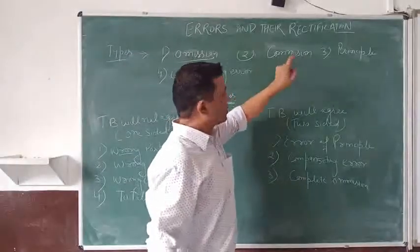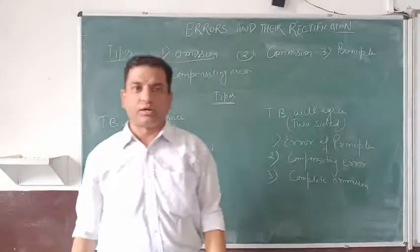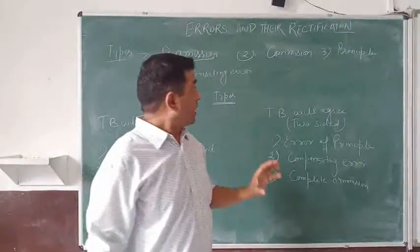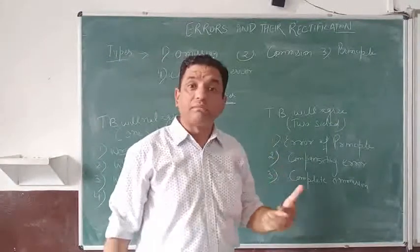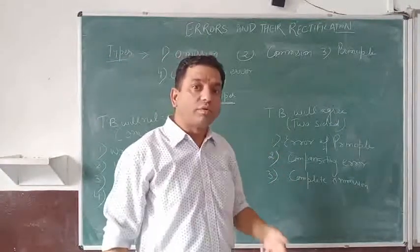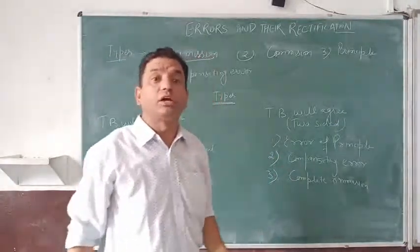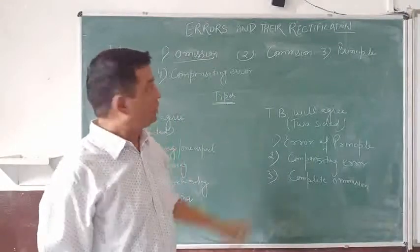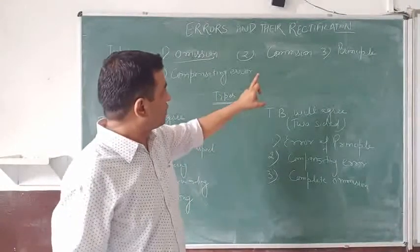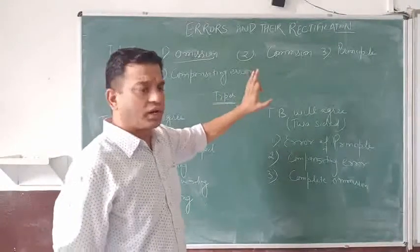The second type is error of commission — when you commit something wrong, when you do something wrong, it is called an error of commission.